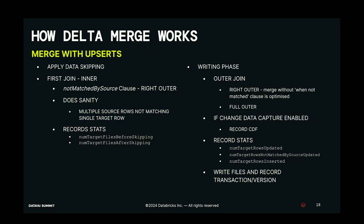To summarize, we have covered optimizations on data skipping, optimizations on the inner join — which when you have a matched-by clause becomes a right outer join with sanity checks for multiple source rows matching a target row — and then the writing phase with the outer join, which can be a right outer or full outer join depending on the conditions present. A very important point is change data capture: if you have enabled CDF, it brings in a whole gamut of additional costs that add up to your merge costs, so you have to be cognizant of that.